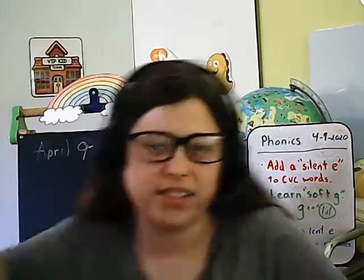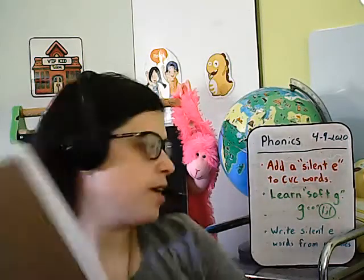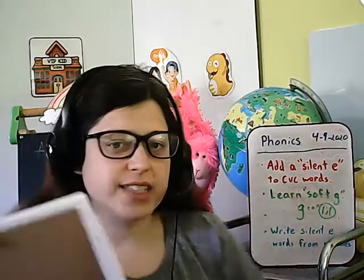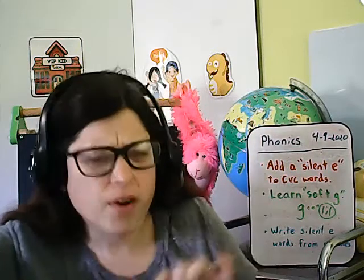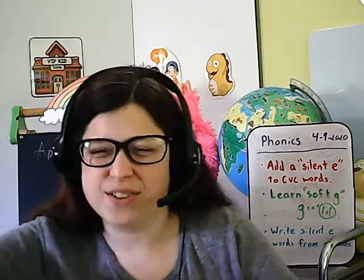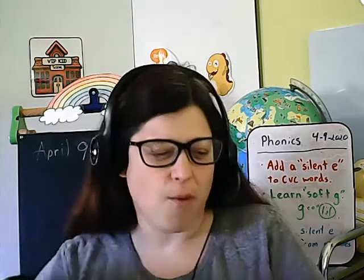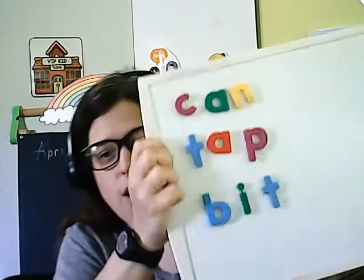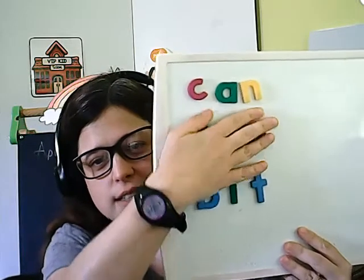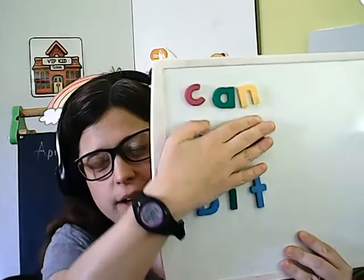The first thing we're going to do is read some CVC words, and then we're going to add the silent E to them and look at how the vowel changes from the short vowel to the long vowel. Here are our three CVC words. Let's tap them out quickly.